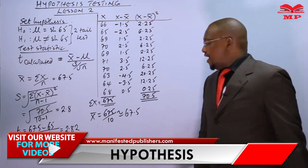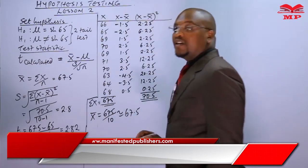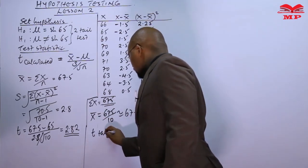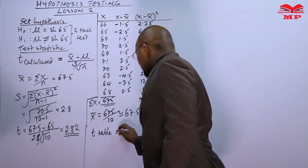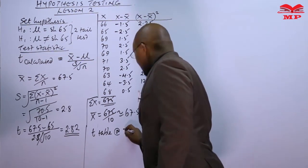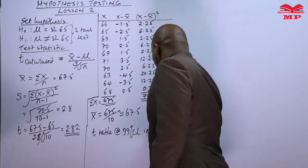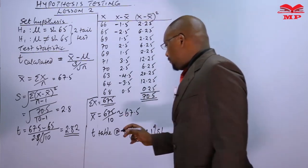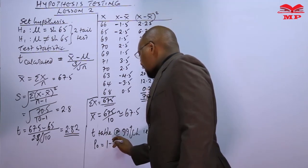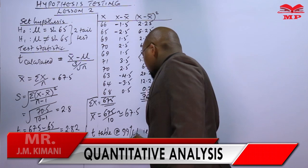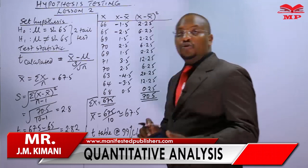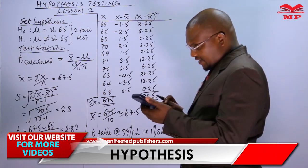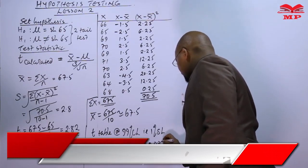We now need t from the table. Since this is a two-tailed test, we must be careful about the tail distinction. This is a 1% significance level. The formula used is 1 minus alpha over 2, which is 1 minus 0.01 divided by 2. So 0.01 divided by 2 gives 0.005, and 1 minus 0.005 gives 0.995, which we use to look up the t-table value.